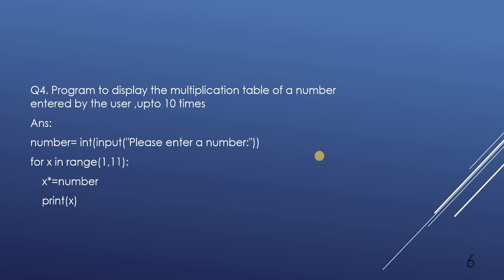Next question: program to display the multiplication table of a number entered by the user, up to 10 times. We take a variable 'number' and get user input. Then for x in range(1, 11) we run the loop 10 times, multiplying x by 'number'. For example if the user enters 2: first x=1, so 1×2=2; then x=2, so 2×2=4; then x=3, so 3×2=6; and so on.